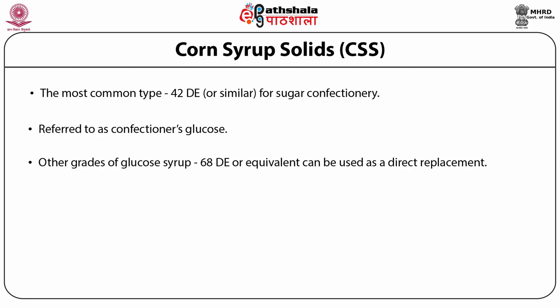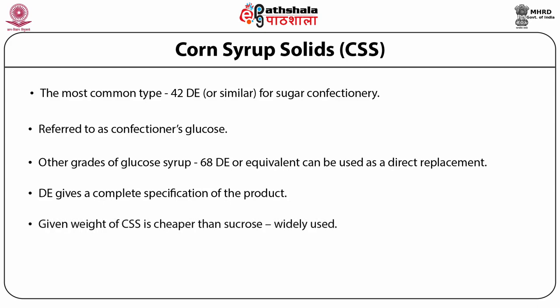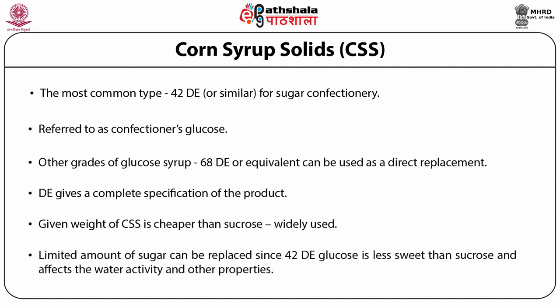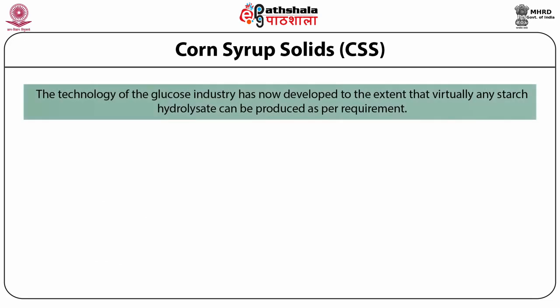While glucose syrups were made by acid conversion, the dextrose equivalent gives a complete specification of the product. The commercial advantage in terms of cost makes glucose widely used, as a given weight of glucose syrup solids is a cheaper source than sucrose. Since 42 dextrose equivalent glucose is less sweet than sucrose, it affects the water activity and other properties of the final confectionery products.